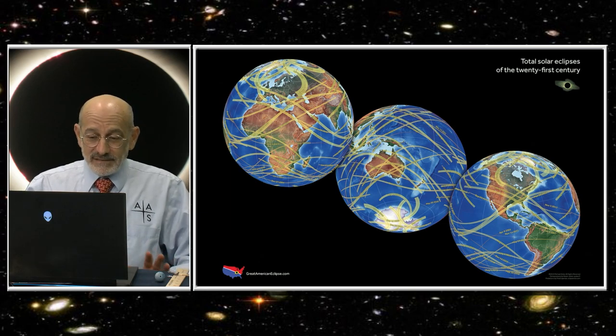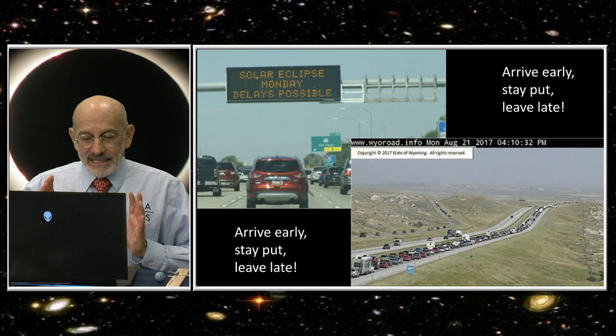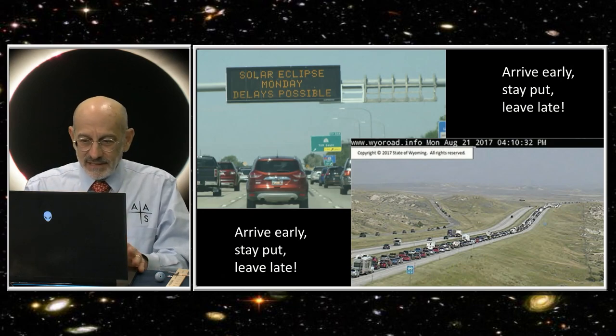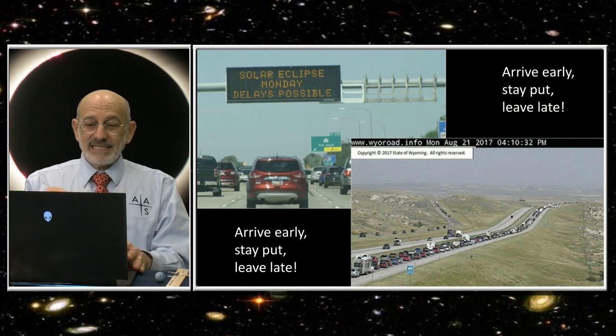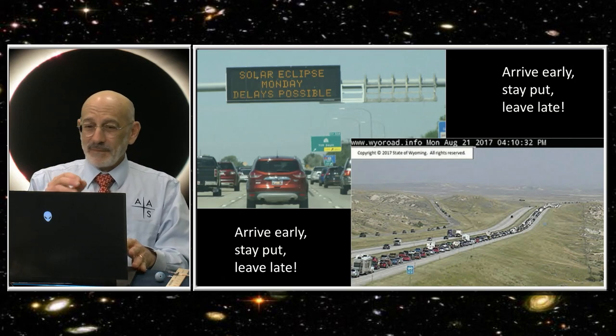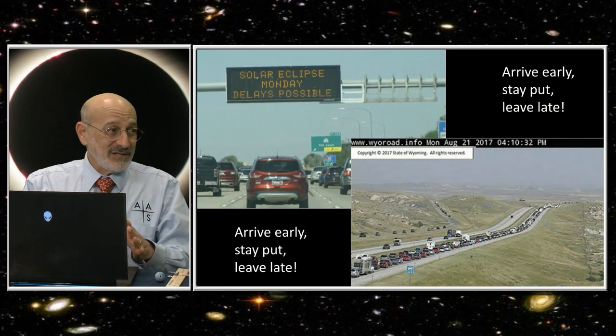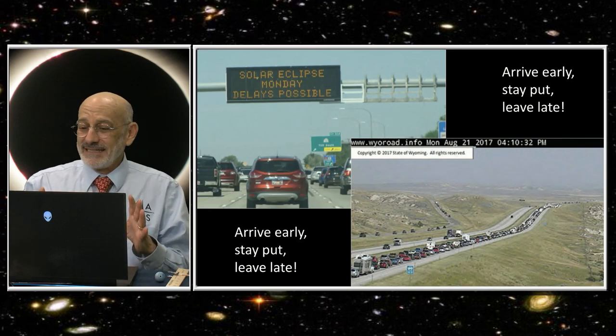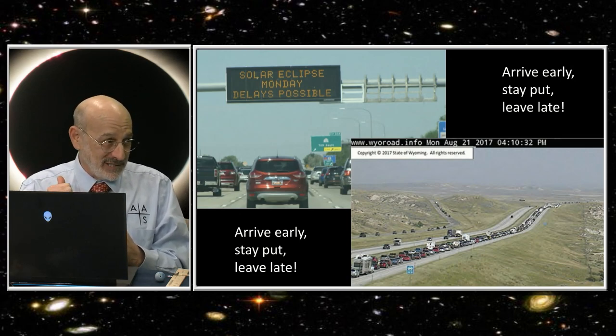My final really essential point concerns traffic. If you're going to get into the path of totality, get there early, stay put, and stay late. Stick around. Because what happened in 2017 is as soon as totality ended, most of the millions of people who went to see it jumped in their cars and hit the road, and the traffic jams were historic. It took an hour to get to the eclipse and 12 hours to get back. In Oregon it was horrific.